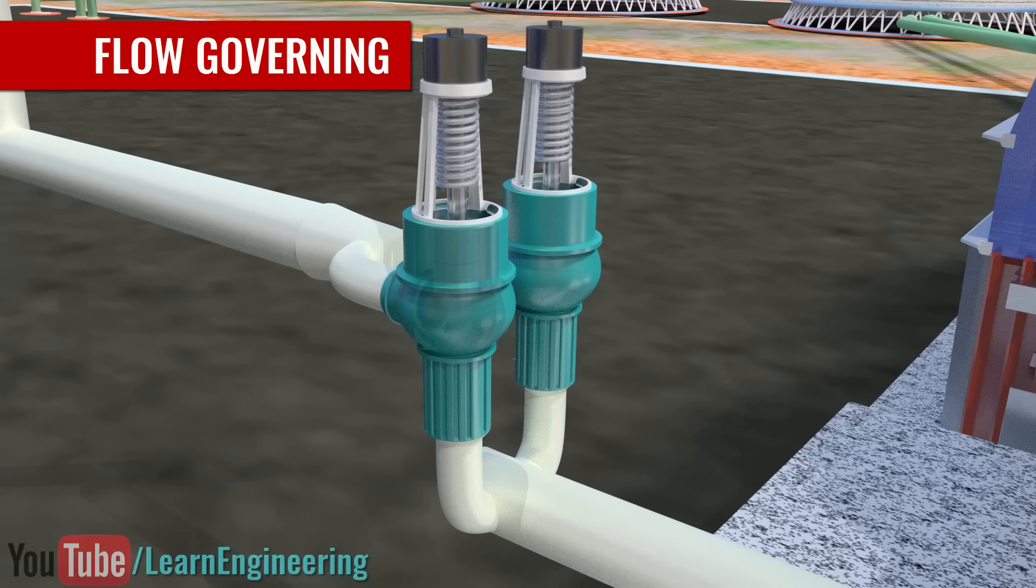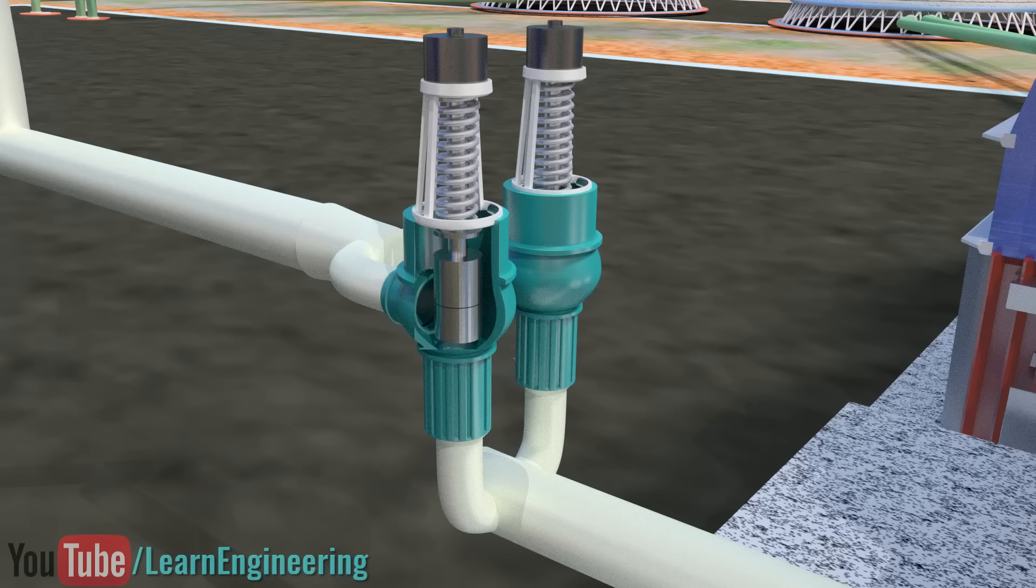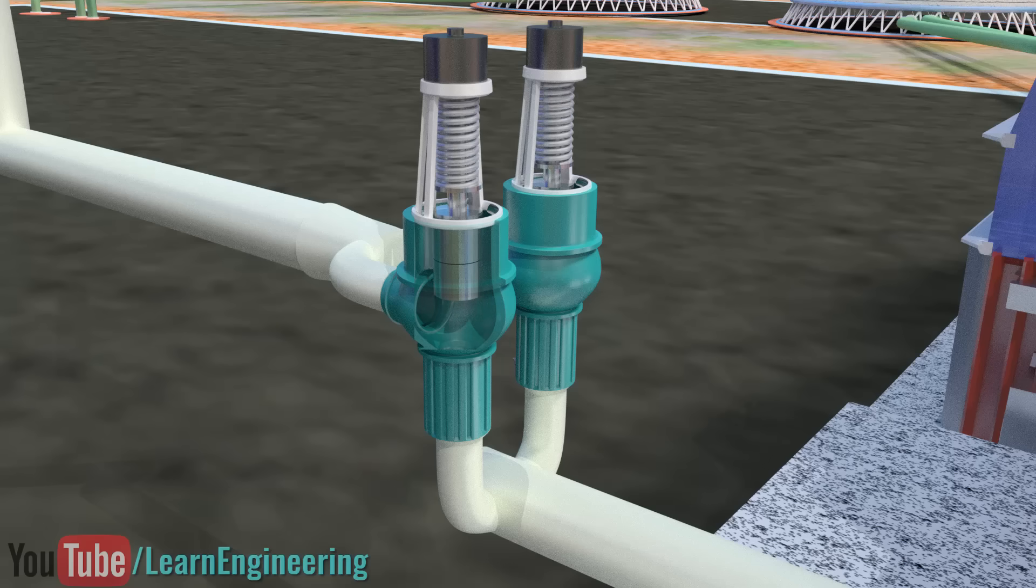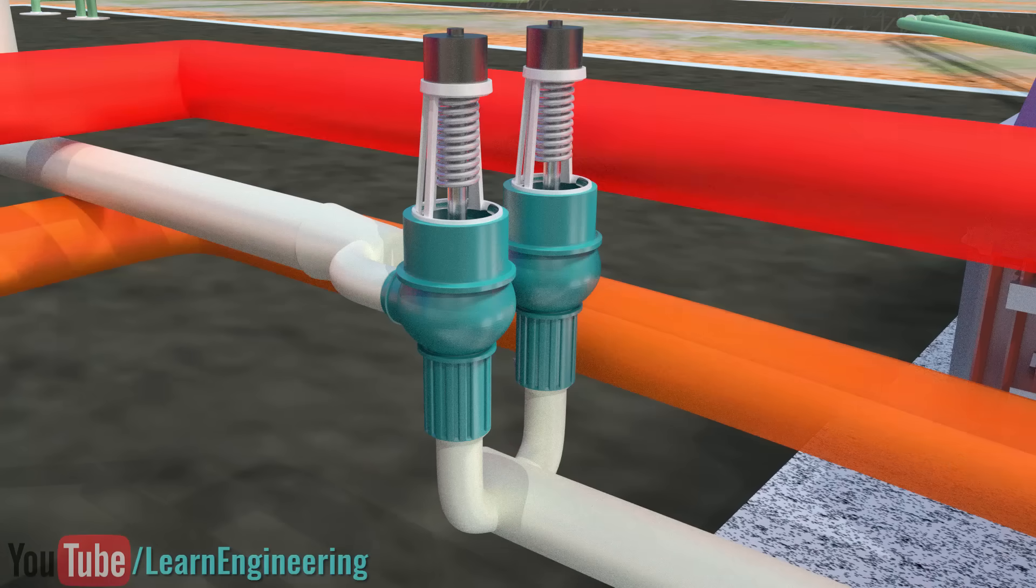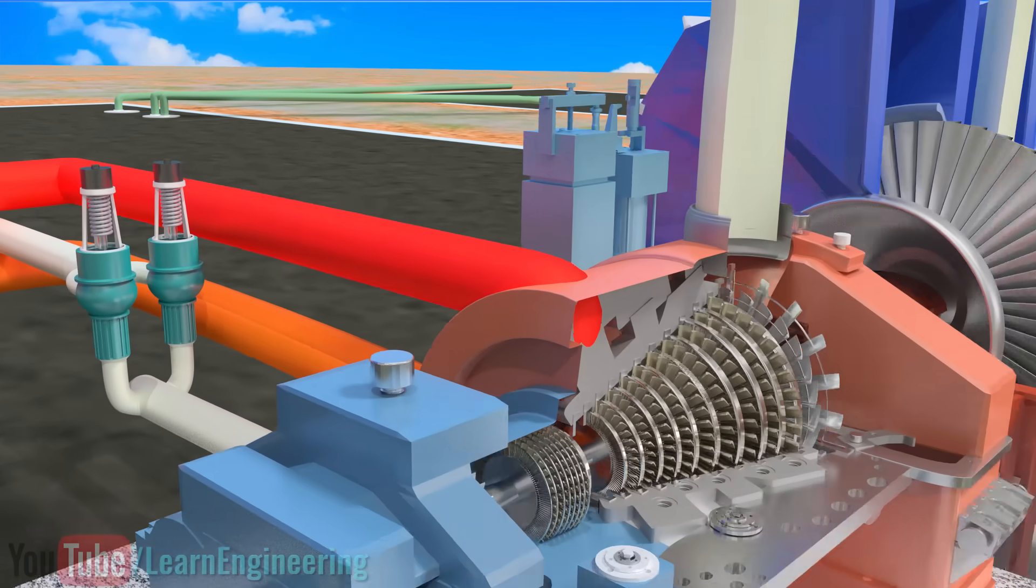If the steam turbine rotates at a higher speed, the control valve will automatically reduce the steam flow rate to the turbine until the speed becomes normal. If the turbine rotates at a low speed, the inverse will be done. In this way, the balance of power demand and power supply will be perfectly synchronized.